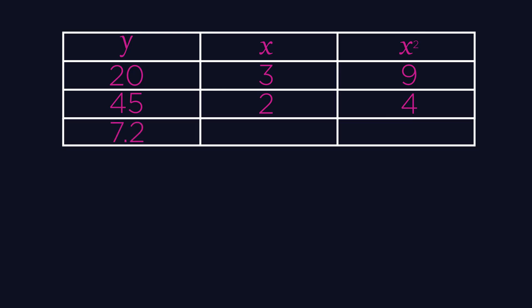If y equals 7.2, we can rearrange our equation to make x squared the subject, giving us 180 divided by 7.2 equals 25 for our x squared value.